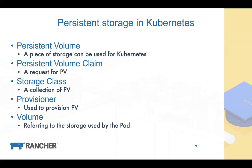One common misconception about PV and PVC is that you might think a Persistent Volume is like a storage pool and a PVC carves out part of it. In fact, that's not true. In Kubernetes, a PV and PVC always have a one-to-one binding relationship — one PV can only be used by one PVC, and one PVC is bound to one PV.